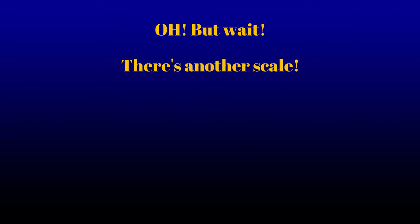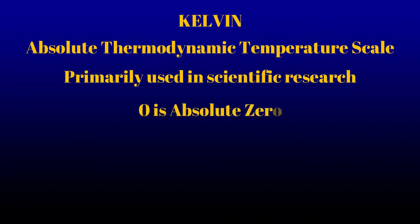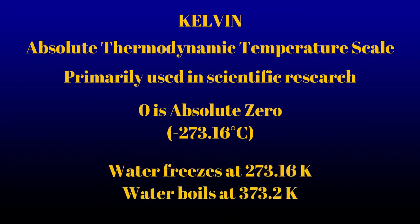There is another scale used in scientific research, known as the Kelvin scale. It is an absolute thermodynamic temperature scale. Zero is absolute zero, or negative 273.16 degrees Celsius. The word degree is not used when referencing Kelvin. For example, water freezes at 273.16 Kelvin.